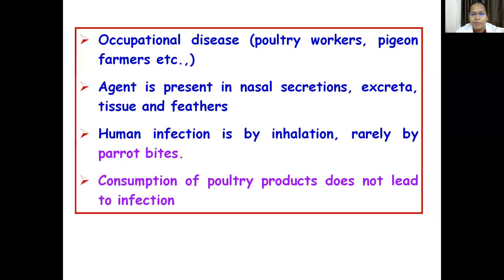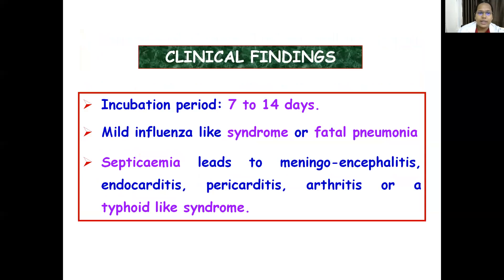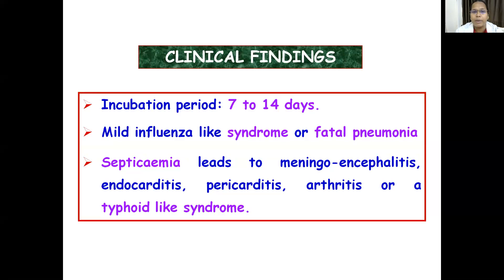Human infection is by inhalation and rarely by parrot bites. Consumption of poultry products will never lead to infection. Case-to-case transmission is seen in humans, and strains from parrots and turkey are more virulent than those from other avian sources.